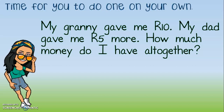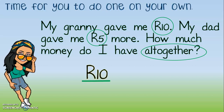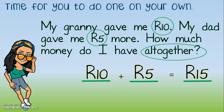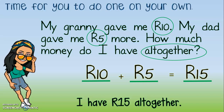Okay, we're back and you did your example. Step number 1: circle the two numbers that make our sum. Circle the word that tells us whether it's plus or minus. Now we write our sum. 10 rand — 'altogether' tells us that it's a plus sum — plus 5 rand equals. What answer did you get? 10 rand plus 5 rand equals 15 rand. Great job! What is our written answer? The question was how much money do I have altogether? I have 15 rand altogether.